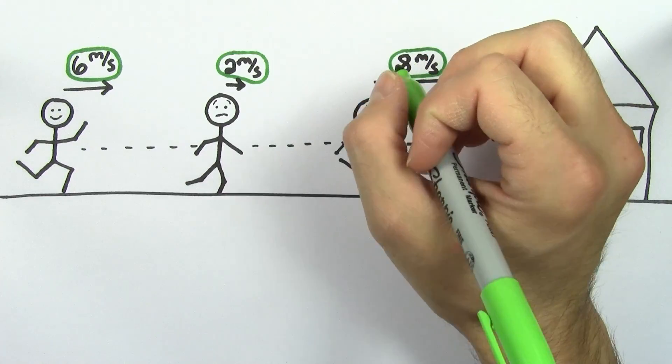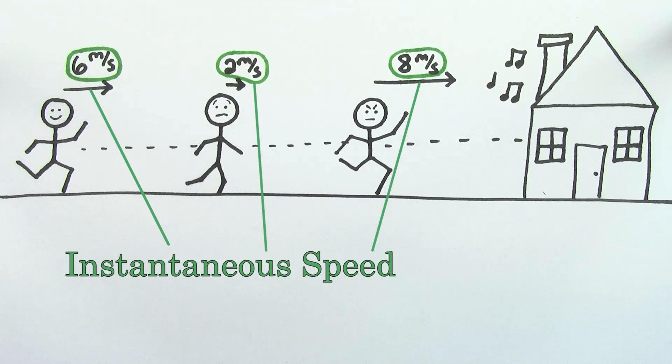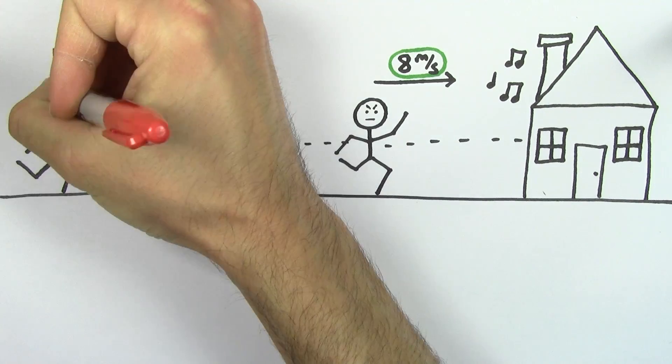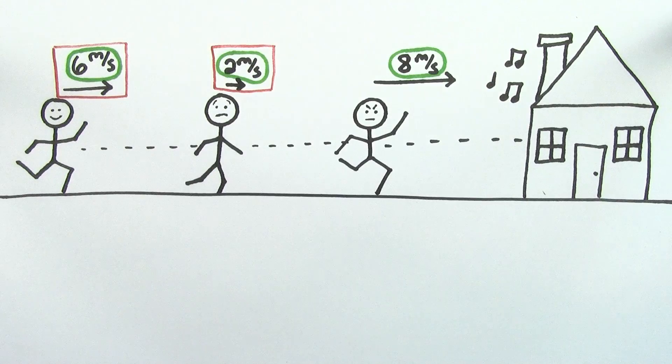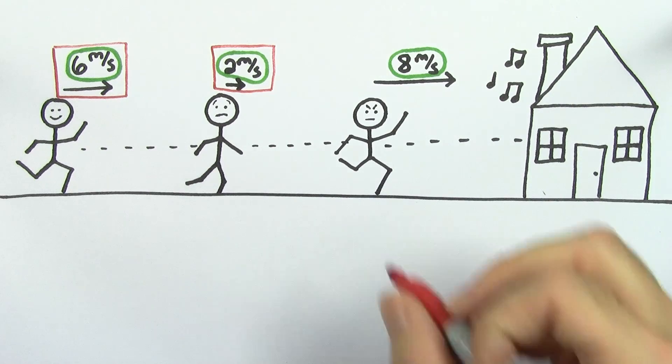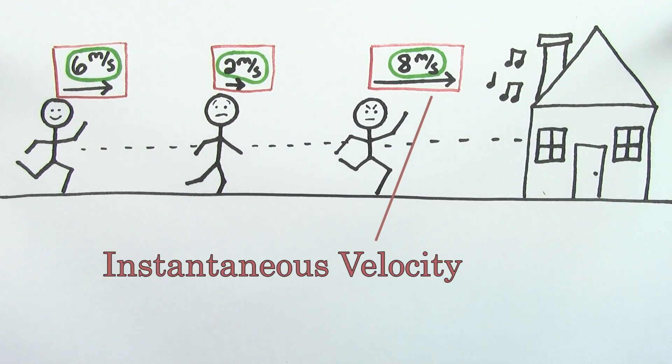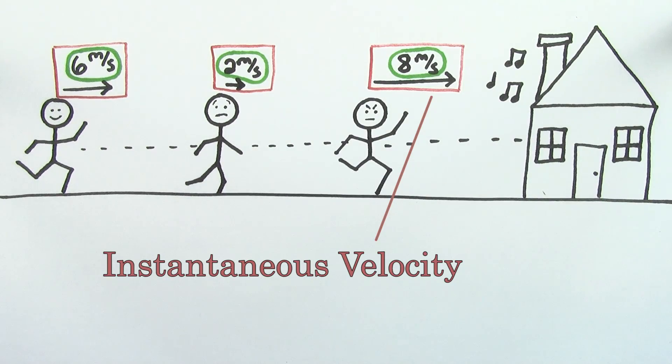These numbers are values of the instantaneous speed. The instantaneous speed is the speed of an object at a particular moment in time. And if you include the direction with that speed, you get the instantaneous velocity. In other words, 8 meters per second to the right was the instantaneous velocity of this person at that particular moment in time.